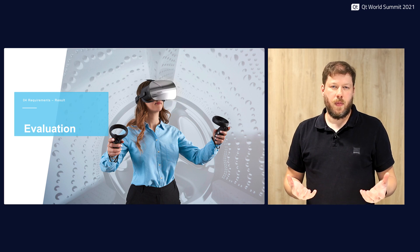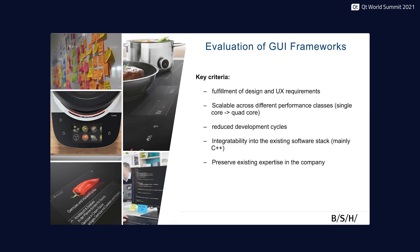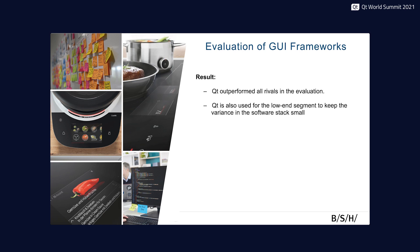In 2017 we wanted to replace our old hardware and software platform with a new one. In the course of this replacement we started looking for a framework for our graphical user interfaces. After the experiences with the predecessor framework, we focused on the following criteria: meeting all design and UX requirements, scalability across different performance classes, shorter development cycles, and good integration with our existing C++ software stack. We also have excellent C++ developers and wanted to use this potential. The result was that Qt outperformed all competitors, including HTML5 and several embedded frameworks.